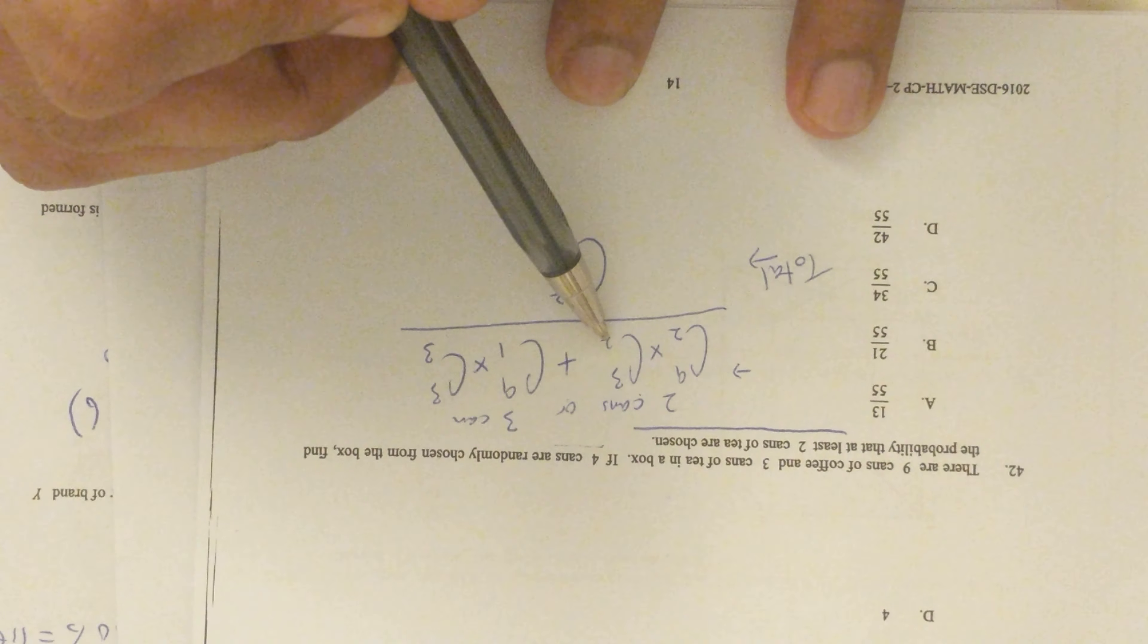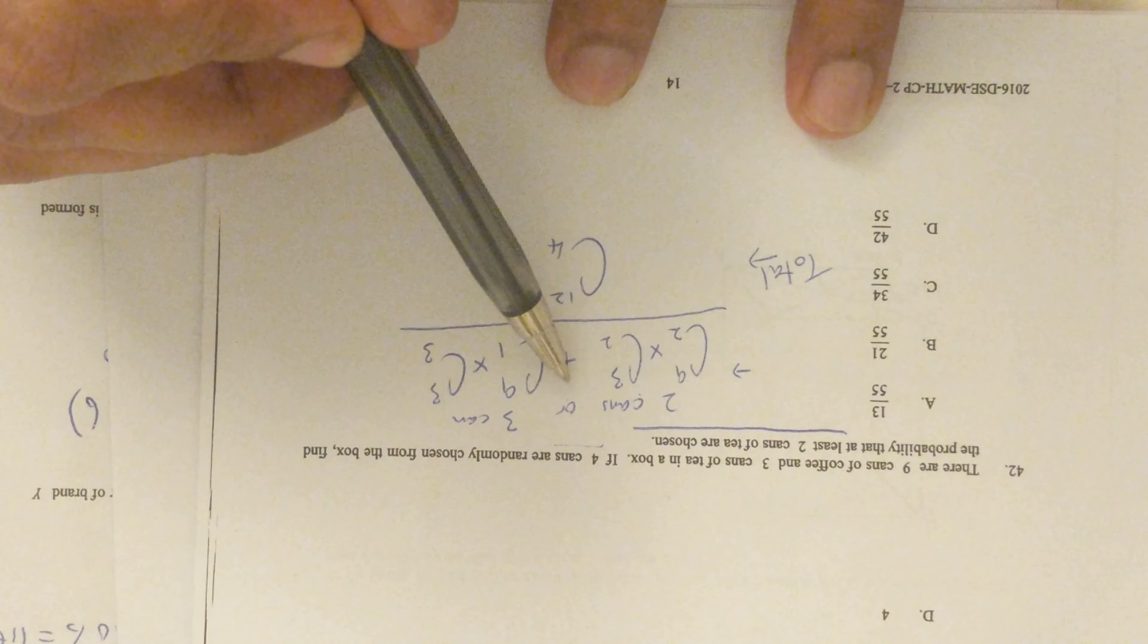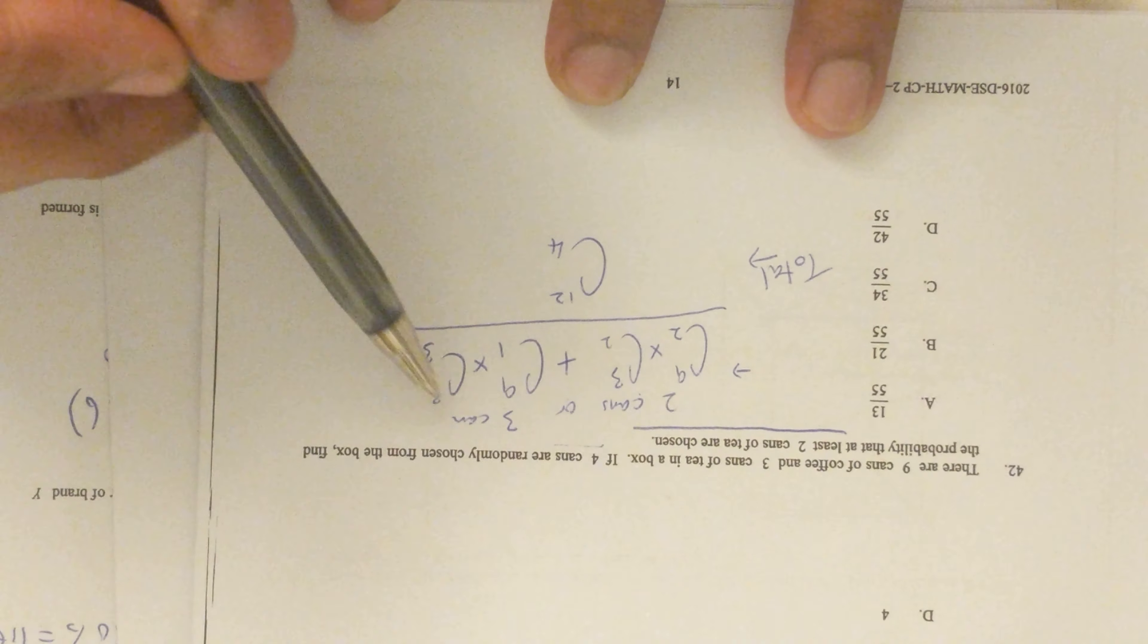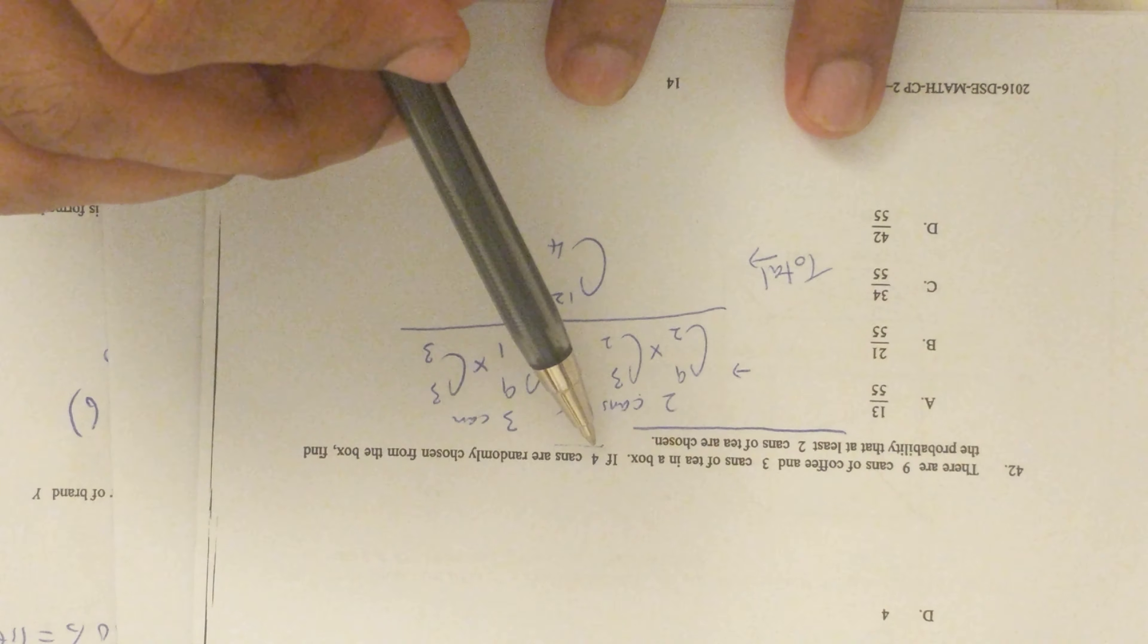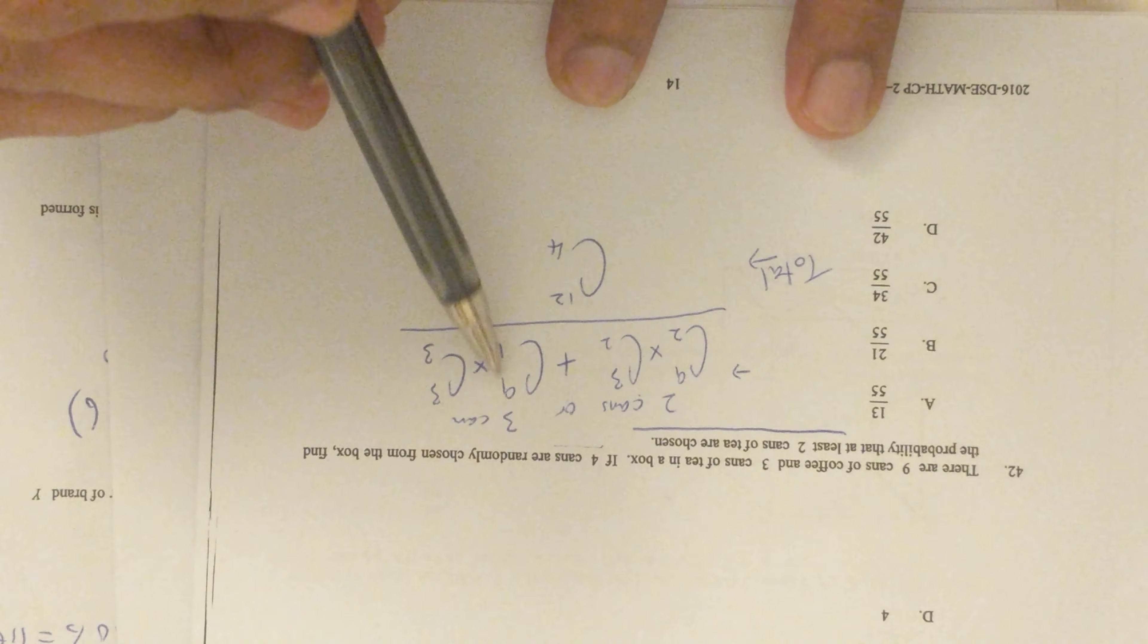Because 'or' is plus, the other option is to choose all three cans of tea. So how many cans need to be chosen from the coffees? Since four cans is needed, we'll choose one from the nine cans of coffee.